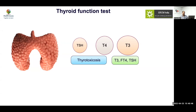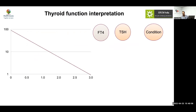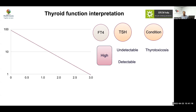The next step is to determine whether thyrotoxicosis is due to release or production — is it TSH-dependent or independent? If FT4 is high, TSH should be less than 0.1. If it is undetectable, this is thyrotoxicosis. If TSH is detectable or on the higher side, it suggests a TSH-secreting adenoma or resistance — less than 0.01% of cases. Most patients will present with high FT4 and low TSH, which is the typical picture.